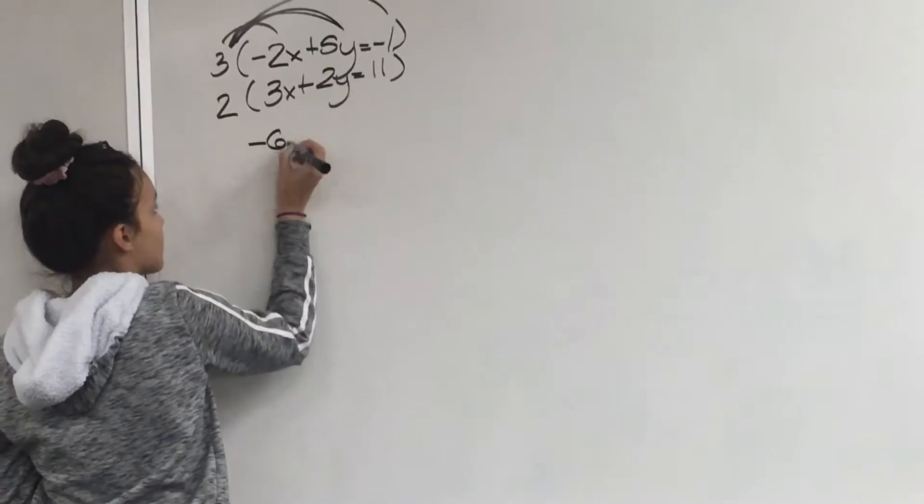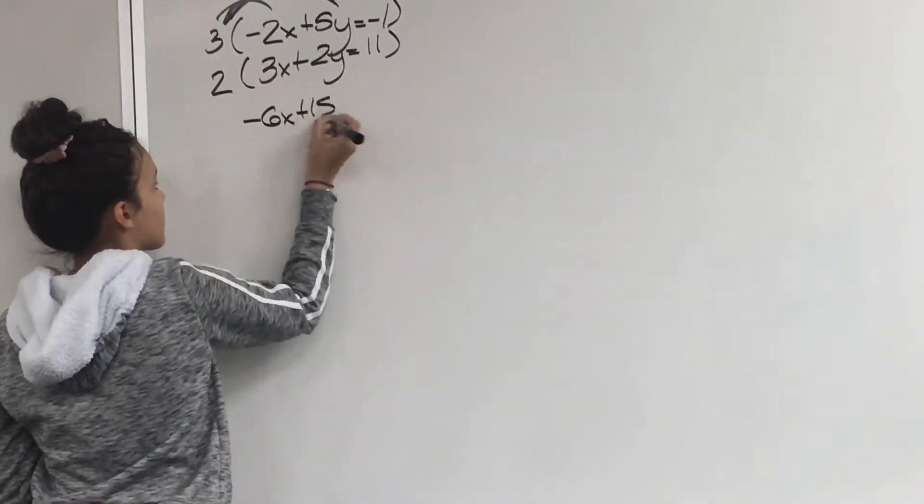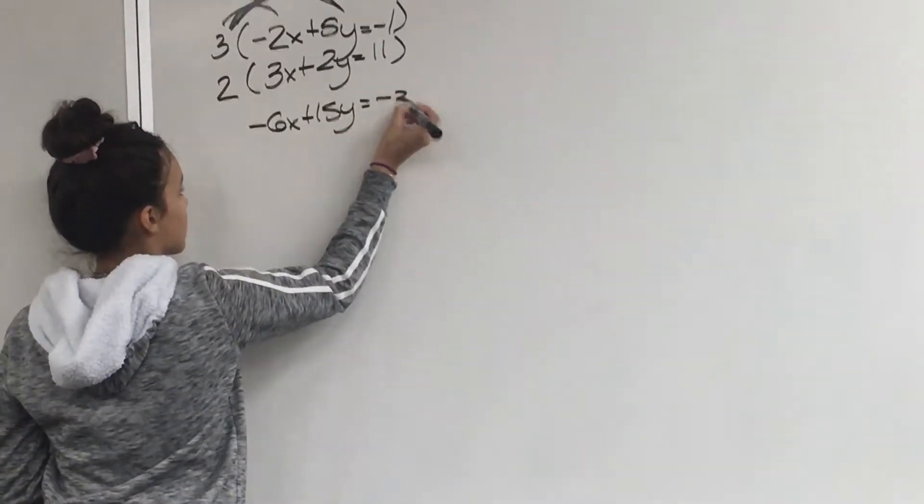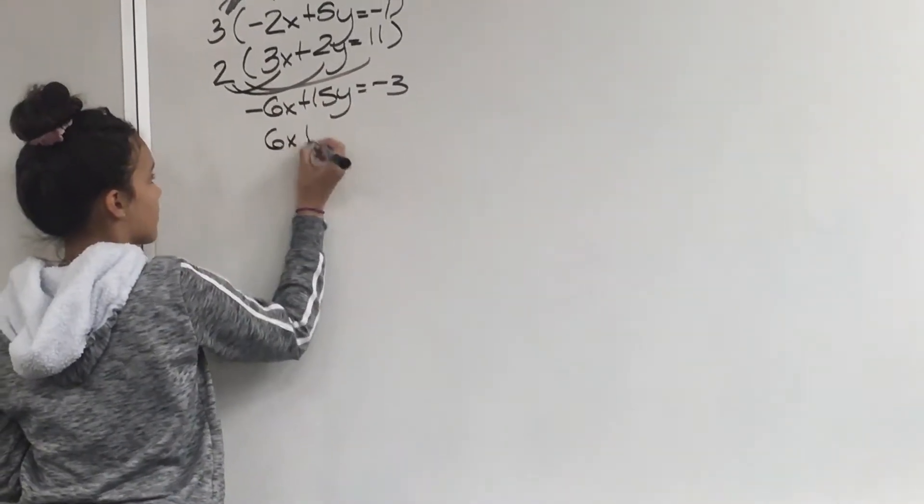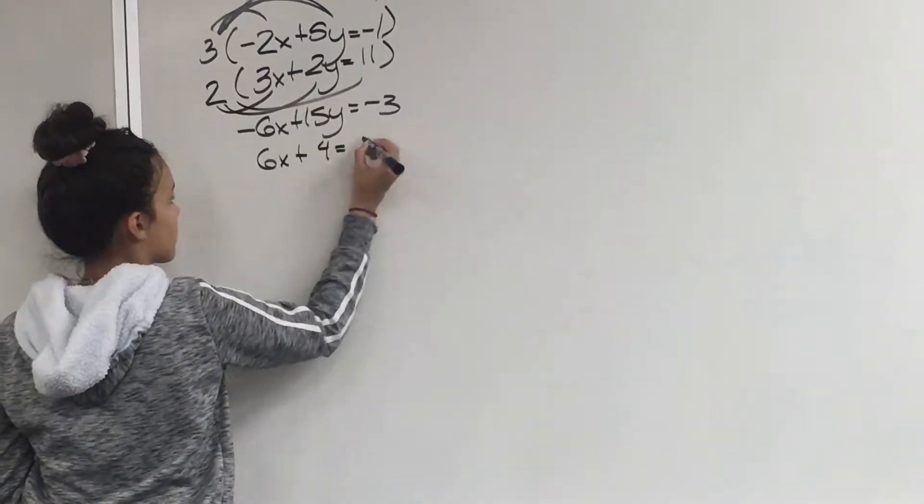you get negative 6x plus 15y equals negative 3. And by distributing the bottom equation by 2, you get 6x plus 4y equals 22.